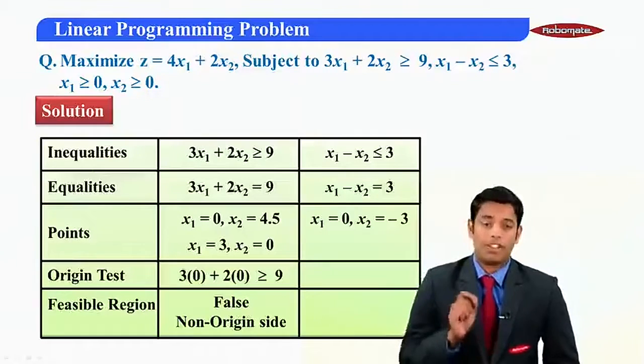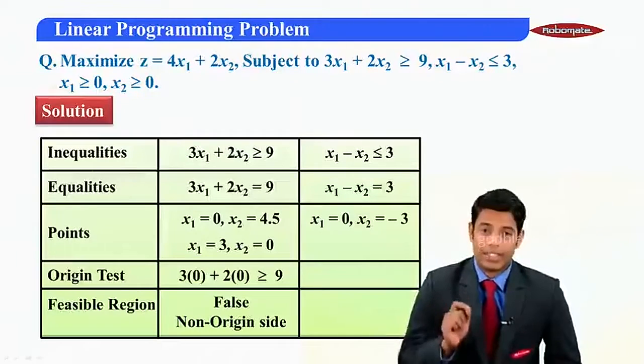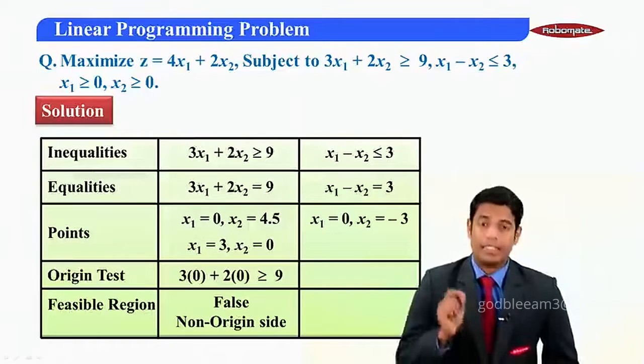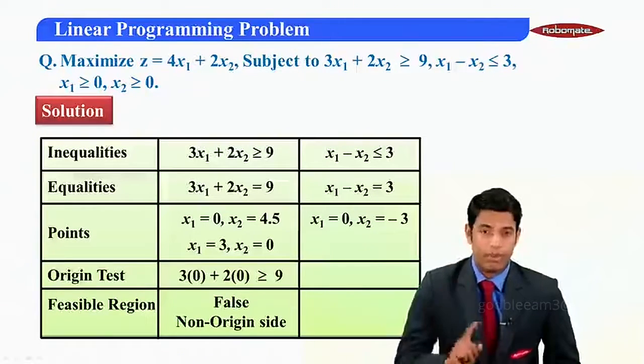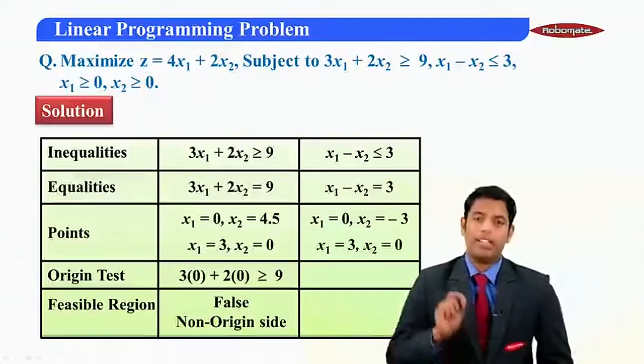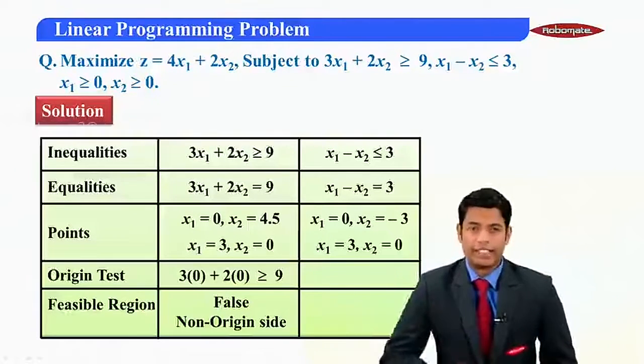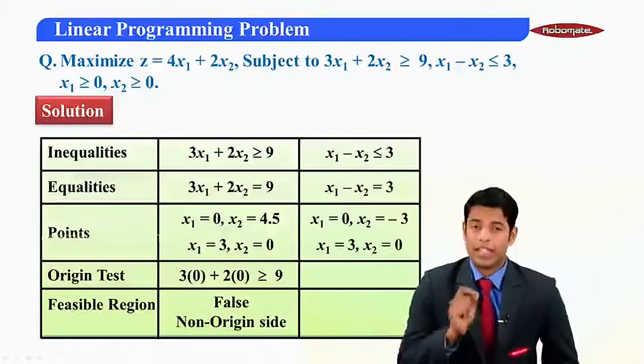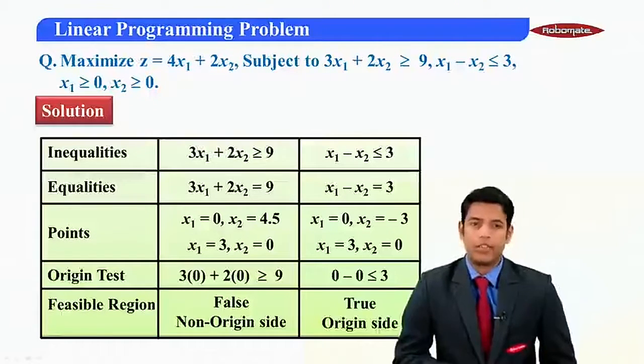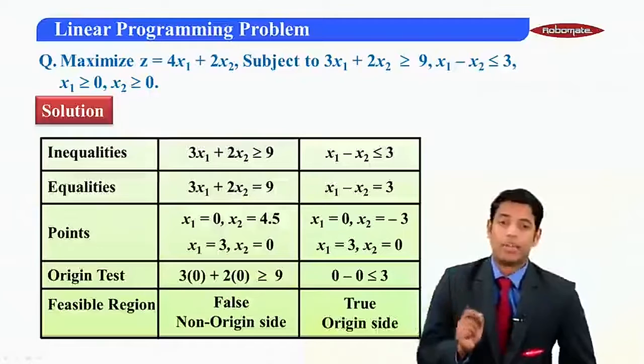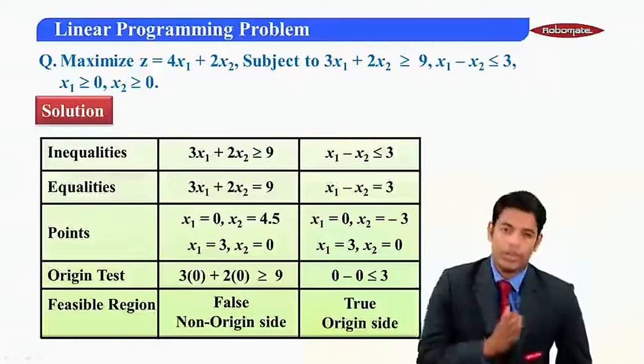So points on this will be x1 is 0, x2 is minus 3, that is 0 comma minus 3 will be one point and another point will be 3 comma 0. Applying origin test we'll put x1 and x2 as 0, that is 0 minus 0 will give us less than or equal to 3 which is obviously true.